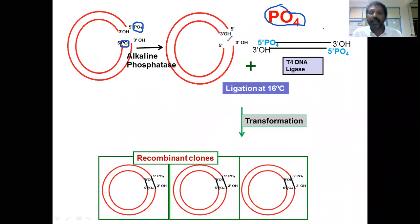Now the linearized vector without phosphate groups and the insert with phosphate groups are ligated. This ligation mixture is transformed. Then you can see the transformants consist of recombinants rather than self-ligated vectors.